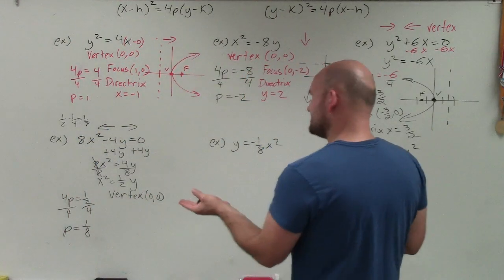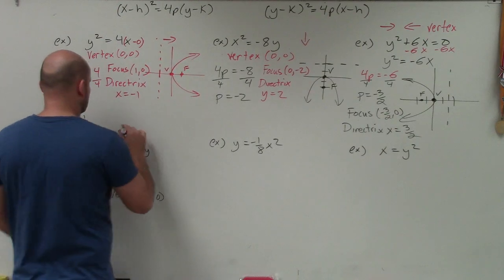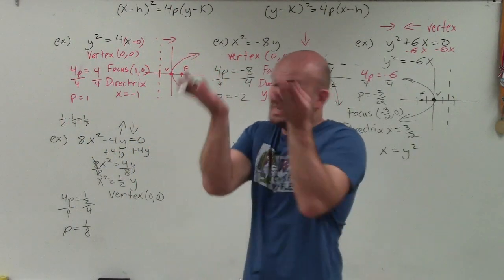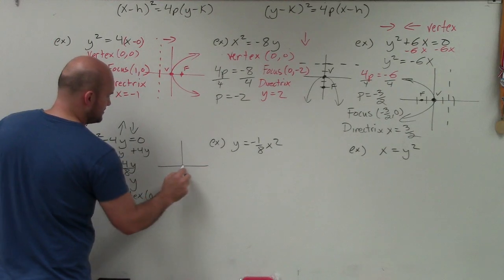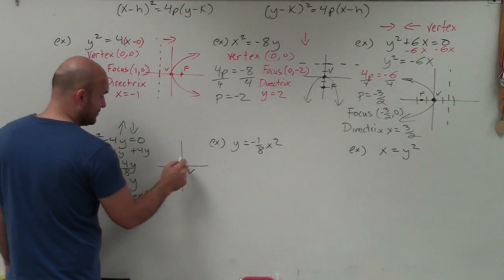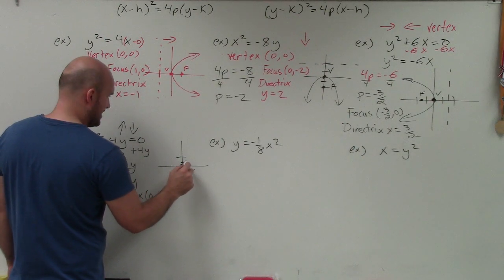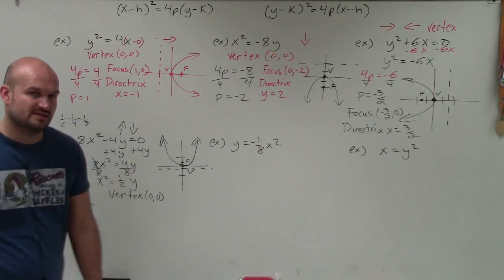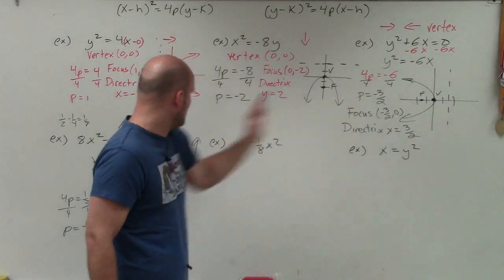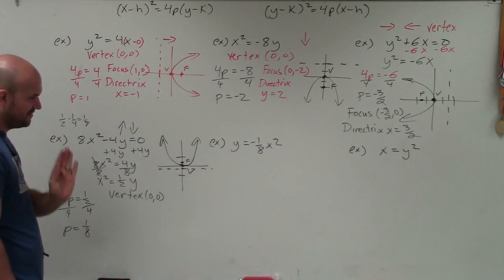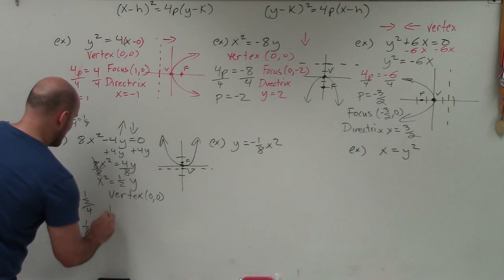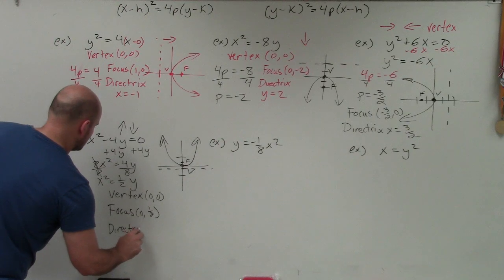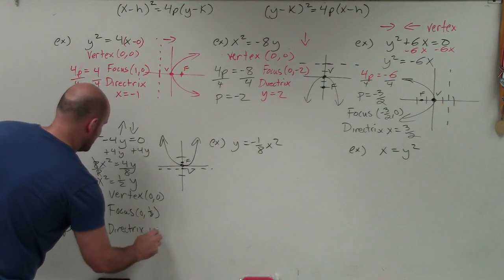The graph opens up, and the focus is very close since p = 1/8 is less than 1. The directrix is perpendicular and below the vertex because the graph always opens toward the focus. So my focus is at (0, 1/8), and my directrix is y = −1/8.